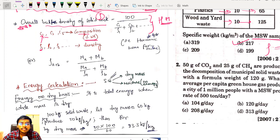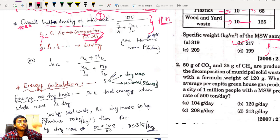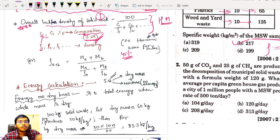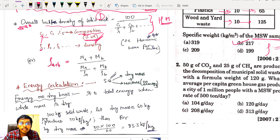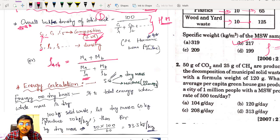There are some more formulas. Instead of giving composition by weight percentage, if direct weights are given — say 45 kg of food waste, 30 kg of ashes — then use: ρ = (M_A + M_B) / (M_A/ρ_A + M_B/ρ_B). As simple as that.